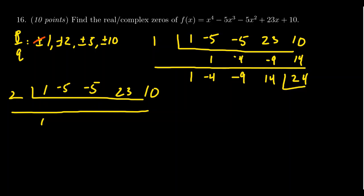So bring down the one. One times two is two. Minus five is negative three. Times two is negative six. Minus five is negative 11. Times two is negative 22. Plus 23 is one. Times two is two. We end up with a 12. So that one didn't work either.